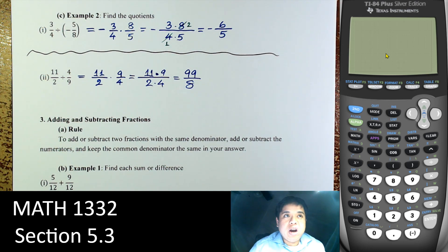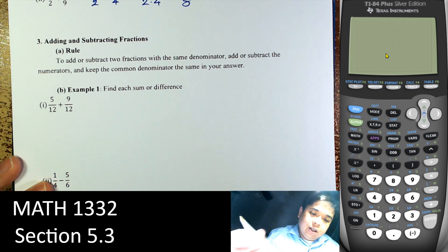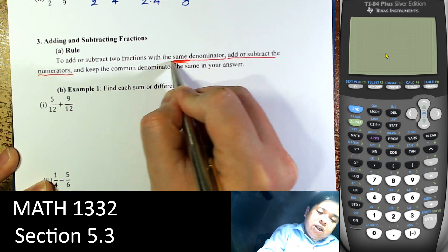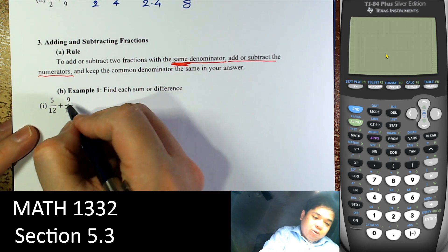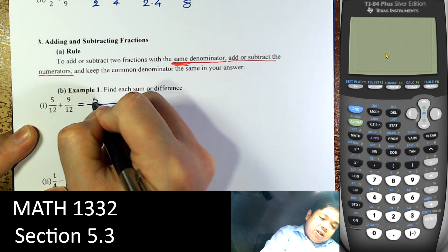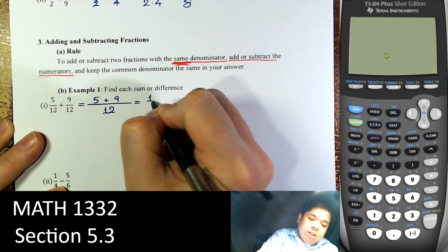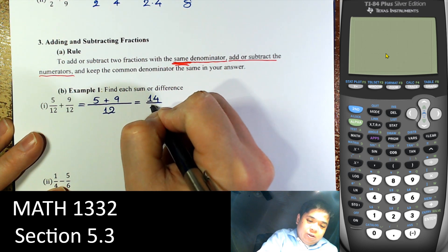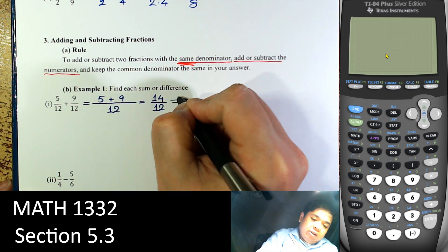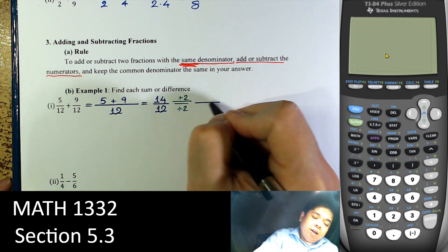Multiplying and dividing fractions is actually easier than adding or subtracting. For adding or subtracting, fractions must have the same denominator — that's the key. If they have the same denominator, we just add or subtract the numerators. For example, adding with a common denominator of 12 gives us 14 over 12, and since both are even we divide by 2 to get 7 over 6.